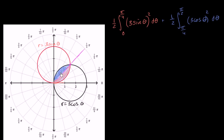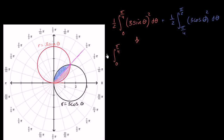Now one thing that might jump out to you is that they're going to be the same area — these two circles are symmetric around the line theta equals pi over four. So one thing we could do is just solve for one of these and then double it to get the total region. So the total area, if I just double the orange expression, I'm going to get the definite integral from zero to pi over four of nine sine squared theta d theta.